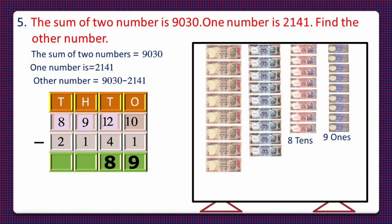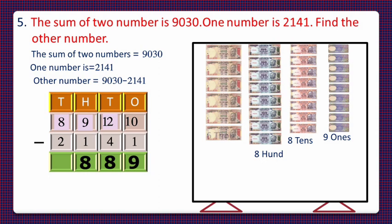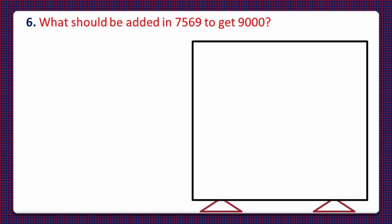On subtracting 1 hundred from 9 hundreds we are left with 8 hundreds — write 8 in the hundreds column. On subtracting 2000 from 8000 we are left with 6000 — write 6 in the thousands column. So 6889 is the other number. Now let's move to question number 6: What should be added to 7569 to get 9000?